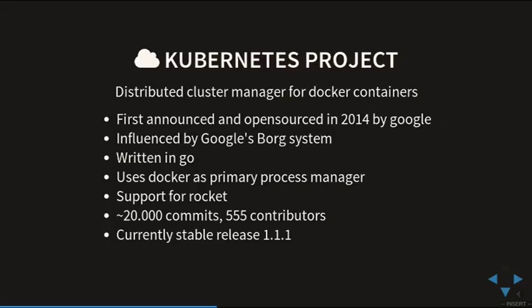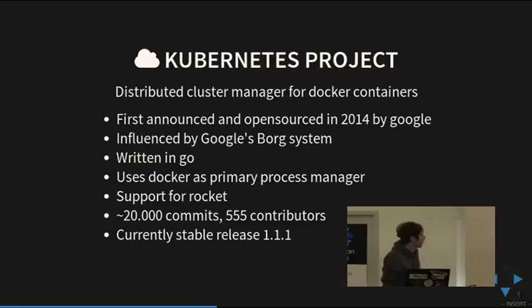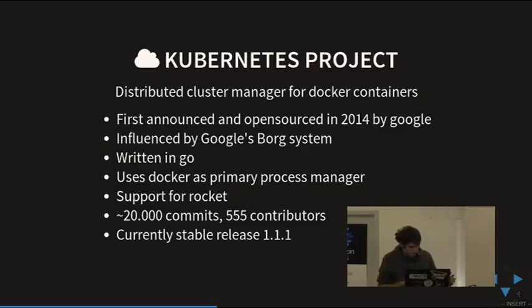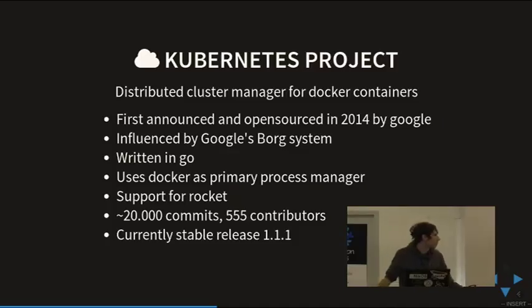Now let's go to Kubernetes. It's open-sourced and announced by Google in 2014 and influenced by Google's Borg system. It's written in Go — as are most of the things I showed you — because Go allows you to pretty easily build static binaries and distribute them anywhere. That's also Google's approach for deploying stuff.